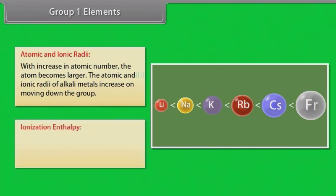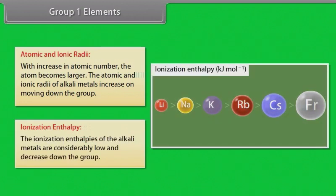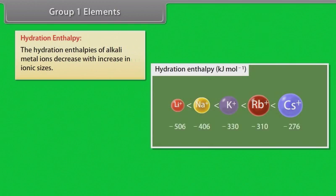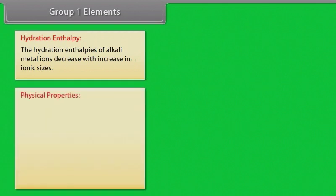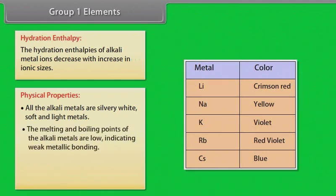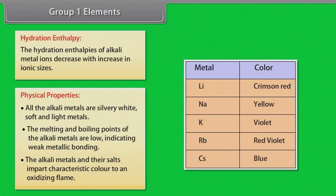Atomic and ionic radii: With increase in atomic number, the atom becomes larger. The atomic and ionic radii of alkali metals increase on moving down the group. Ionization enthalpy: The ionization enthalpies of the alkali metals are considered low and decreased down the group. Hydration enthalpy: The hydration enthalpies of alkali metal ions decrease with increase in ionic sizes. Physical properties: All the alkali metals are silvery white, soft and light metals. The melting and boiling points of the alkali metals are low, indicating weak metallic bonding. The alkali metals and their salts impart characteristic color to an oxidizing flame.